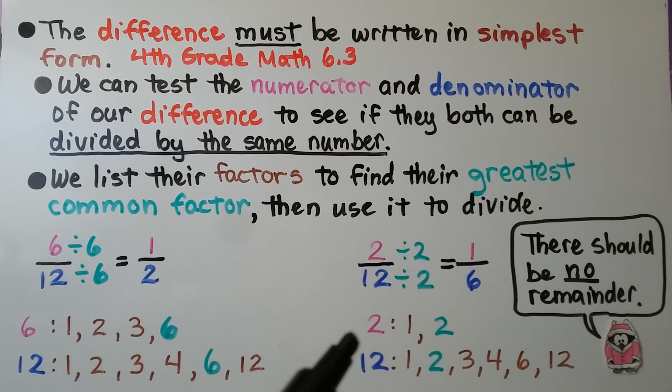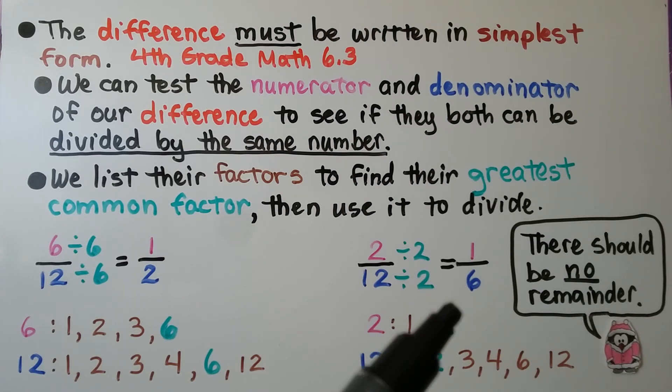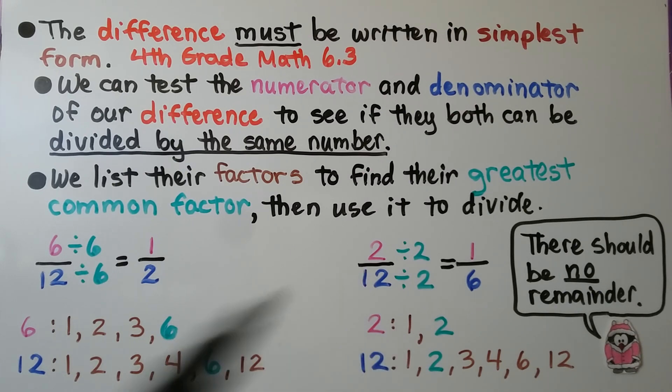For two-twelfths, we write the factors for two and the factors for twelve. The factor that they have in common that is the greatest is two. We divide the numerator and denominator by that two, and it equals one-sixth. There should be no remainder when we do this division.